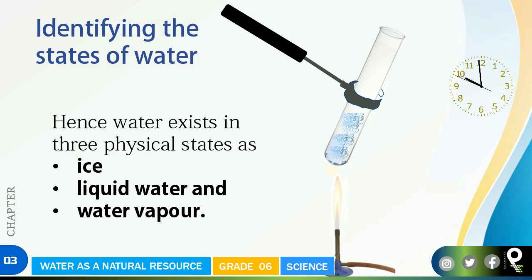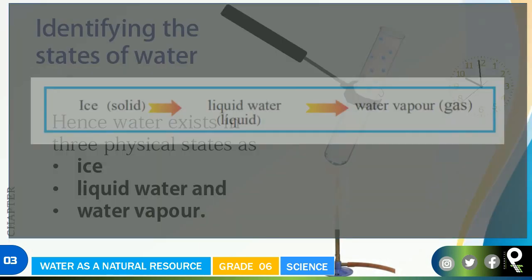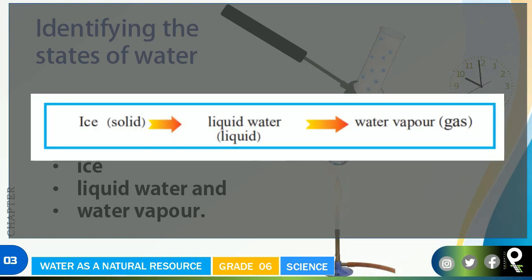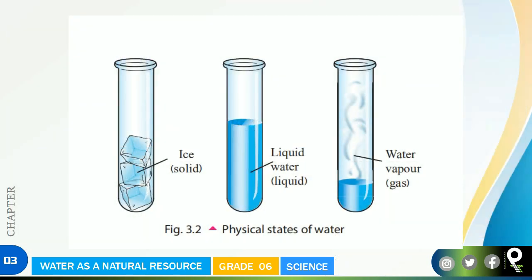Look at this: ice, then liquid water, and water vapor. So we understood these three states. Ice as solid will convert when you are heating into liquid water, and further when we are heating it will go away as water vapor, that is gas. Solid, liquid, and gas state are the states of water.